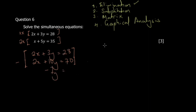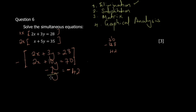For the constants: 28 − 70. The larger number is 70, so the result takes a negative sign — we get −42. So we have −7y = −42. Dividing both sides by −7 gives y = 6.